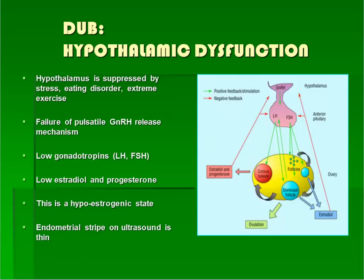Another type of anovulation that is less common occurs from suppression of the hypothalamus. The hypothalamus normally produces gonadotropin releasing hormone, or GnRH, which acts on the pituitary to stimulate release of the gonadotropins FSH and LH. If the hypothalamus is suppressed — which can occur with extreme stress, eating disorders, weight loss, or a brain tumor — GnRH is not produced, and there is no GnRH to stimulate the pituitary to make gonadotropins. If gonadotropin levels are low, the ovary is not stimulated to make estrogen or to ovulate, so both estrogen and progesterone are low. This is different from the more common type of anovulation where progesterone is low but estrogen levels are normal or high. Low levels of estrogen can lead to irregular bleeding because the uterine lining becomes very thin and fragile. Pelvic ultrasound shows a thin endometrial stripe in these patients.